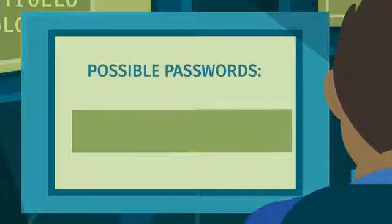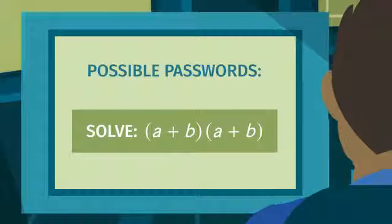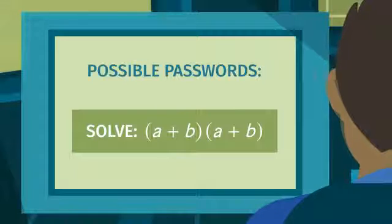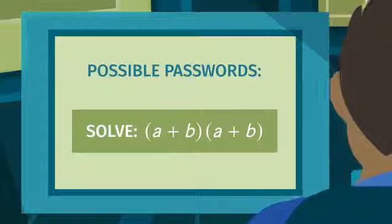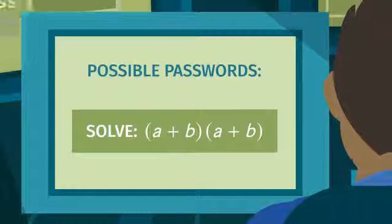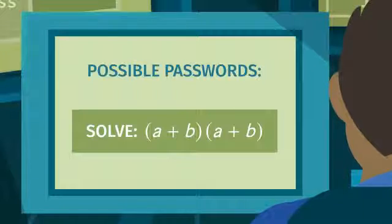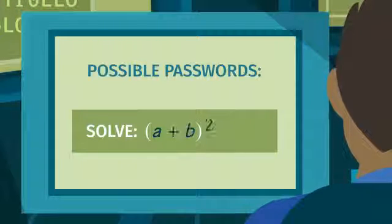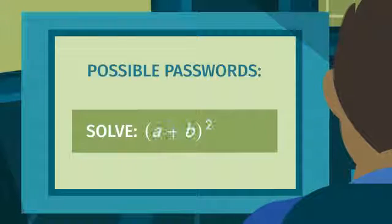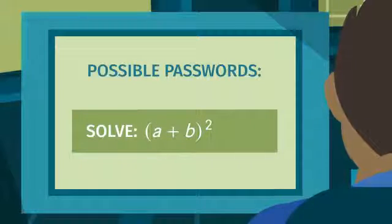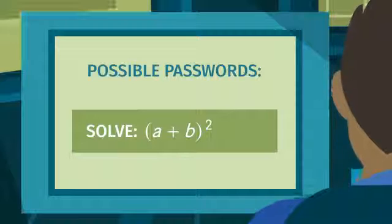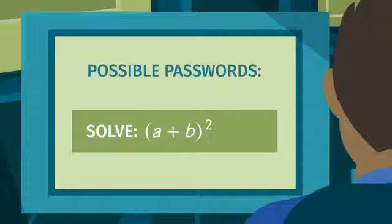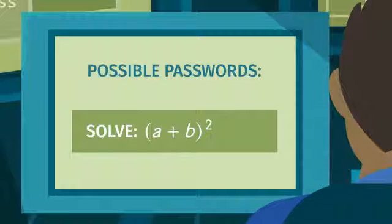G-Squared is at the first security wall. To gain access to the first level, he has to simplify this expression: the sum of a and b squared — a.k.a. the sum of a and b times the sum of a and b.